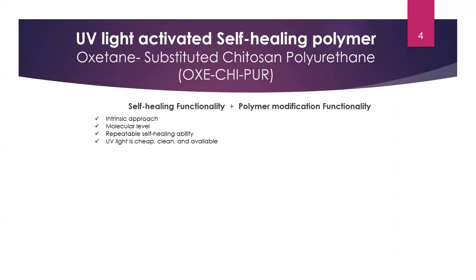Sunlight is a cheap, clean, and available source of UV light. For the polymer modification functionality, it was expected that this self-healing polymer would improve rutting resistance of asphalt pavement and also improve its cracking performance.